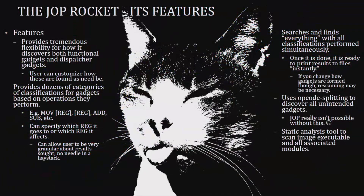The JOP Rocket offers tremendous flexibility in discovering both functional and dispatcher gadgets. There are reasonable defaults, but you can enlarge or narrow the scope. It classifies gadgets into dozens of categories based on operation — such as ADD or SUB — and by registers affected, allowing very specific queries. There's also an option to export everything as CSV for broad insight into whether a binary has enough gadgets to support JOP. It features opcode splitting, which is more complex for JOP since you're looking for indirect calls and jumps rather than just RETs.